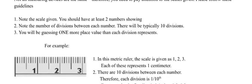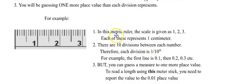Note the scale given — you should have at least two numbers showing. Note the number of divisions between each number; there will typically be ten divisions. You'll be guessing one more decimal place beyond each division. For example, if the numbers are in the ones, the divisions are the tenths, and you're going to guess to the hundredths. So whatever the scale is, you're going to be going two decimal places further when you read it.